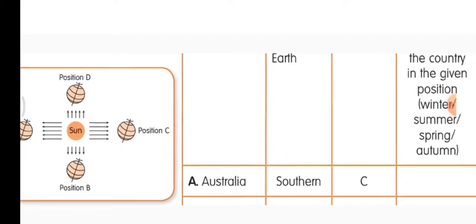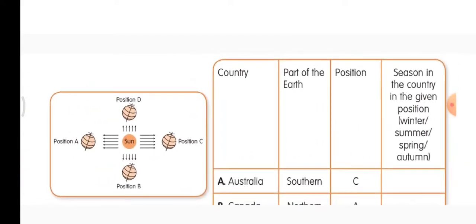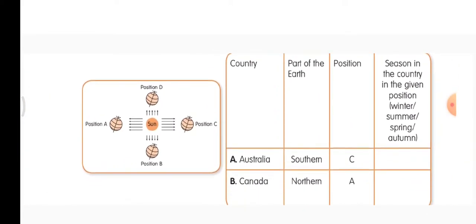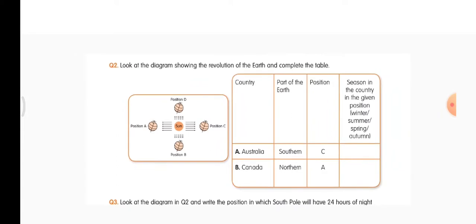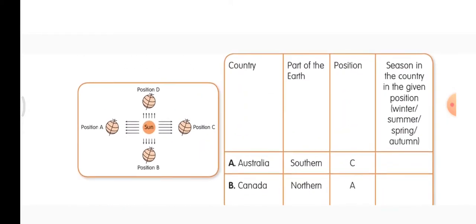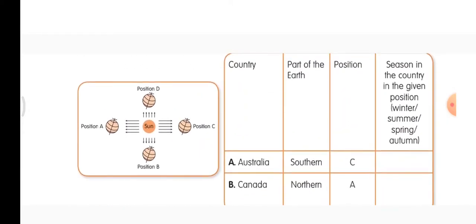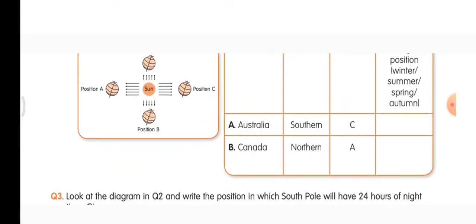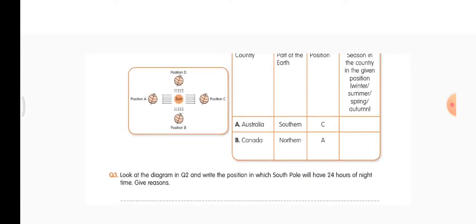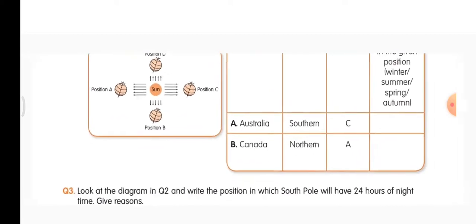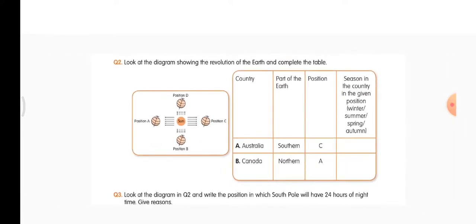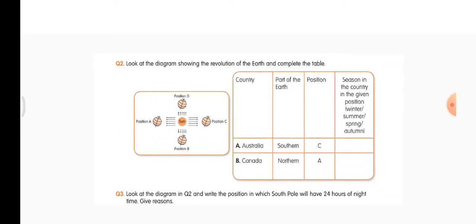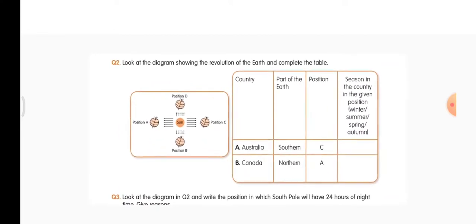After observing the diagram properly, complete this table: country, part of the earth, position, and season in the country in the given position — winter, summer, spring, or autumn. For Australia, which is in the southern part of the earth, identify its position and determine which season it will have.